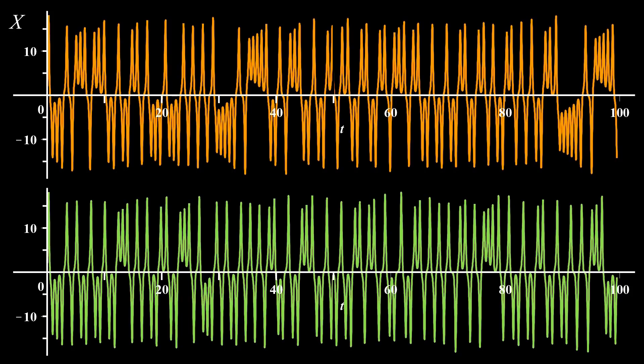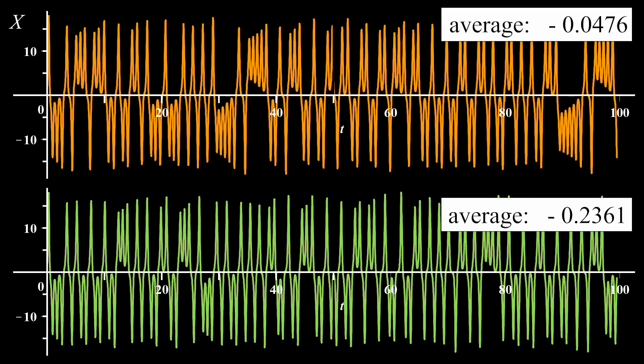you'd expect the average to be approximately zero. Indeed, I calculated the average from t equals zero to t equals one hundred and it comes out to be approximately zero. What this means is that the system spends about equal amounts of time on each wing of the attractor.